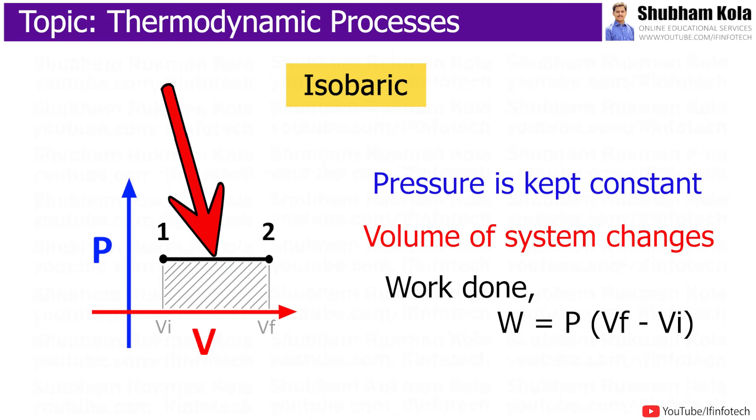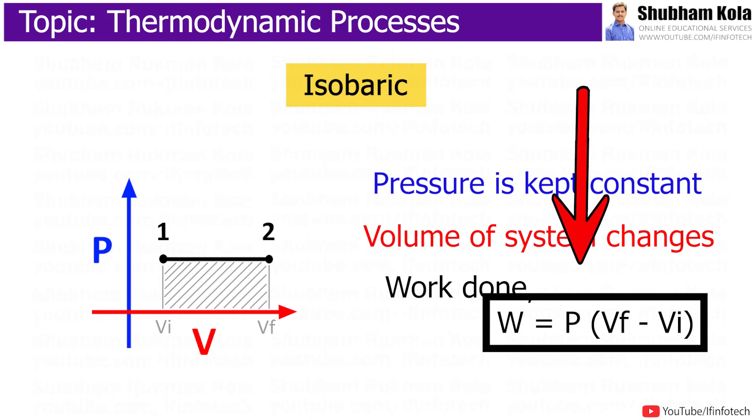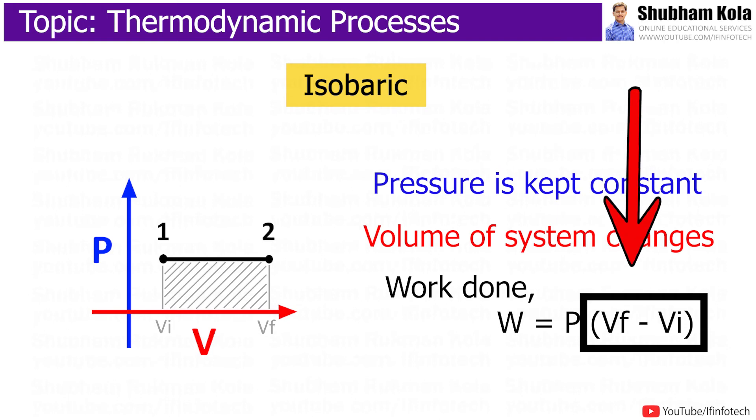And work done can be calculated by the equation W equals P multiplied by change in volume, that is V final minus V initial. If change in volume is positive, that is expansion, the work done is positive. And for negative change in volume, that is contraction, the work done is negative.